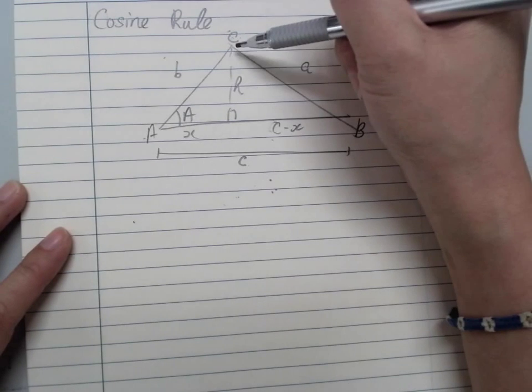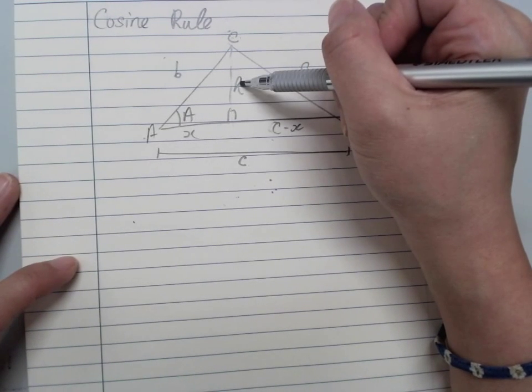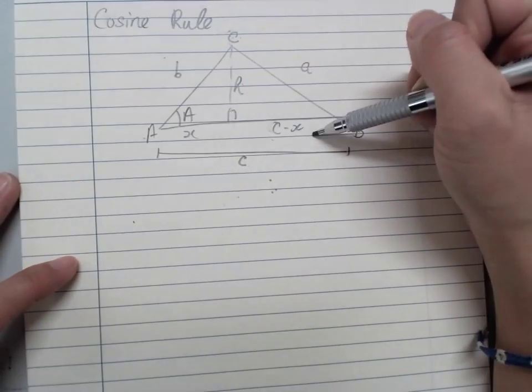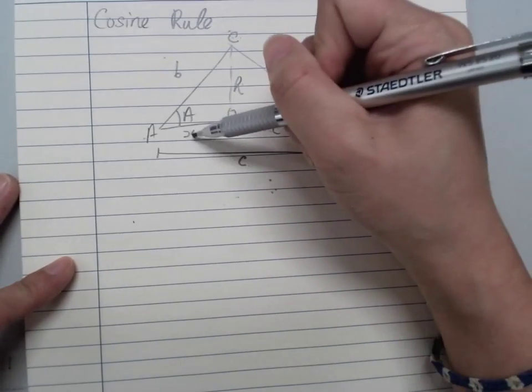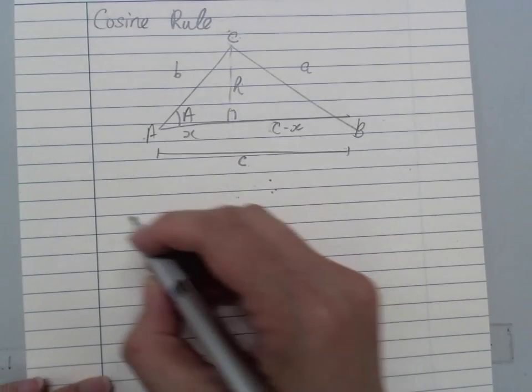I have also drawn the height of the triangle, which breaks C into X and C minus X. So let's get started.